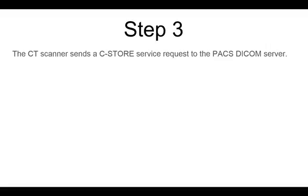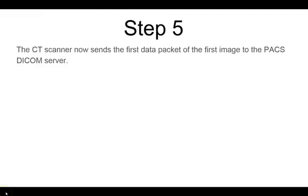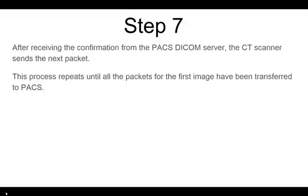Then you can talk about the real reason for the phone call. CT says 'can you store these images for me?' and PACS says 'sure, I'll take those images.' The CT scanner sends the first data packet of the first image — most images are broken into four data packets. PACS performs the C-Store, and when complete sends a confirmation back. This is just the first packet of the first image. The CT scanner then sends the next packet, and this goes back and forth until all four packets are received — one complete image into PACS.